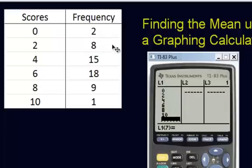And then you have the second column, which is going to be our L2, and that's going to be for our frequency. So we have 2, 8, 15, 18, 9, and 1. So now we have our table, our frequency distribution that we have from over here is now in the calculator.